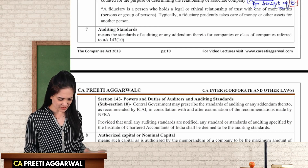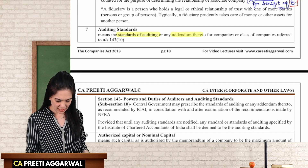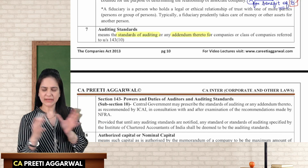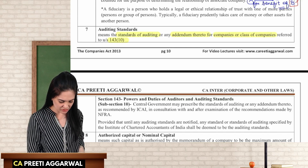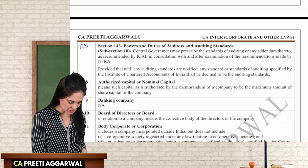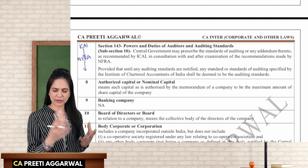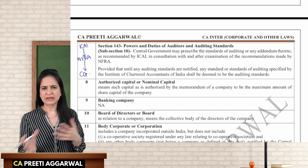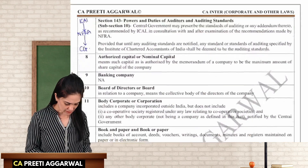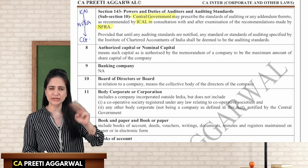Auditing standards — I don't think this will be asked in the exam. Auditing standards means the standards of auditing or any addendum thereto for companies or class of companies referred to in Section 143 Subsection 10. The format is the same as accounting standards: ICAI recommends the auditing standards to NFRA, NFRA examines them and recommends them to the central government, and the central government prescribes them. So the three authorities and keywords are ICAI, NFRA, and central government.